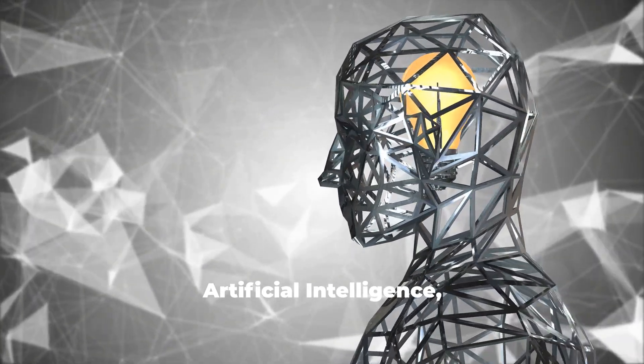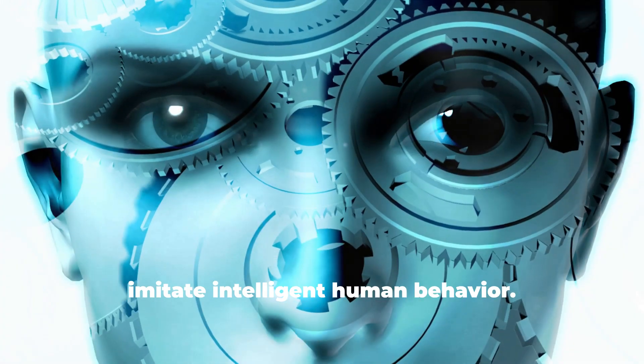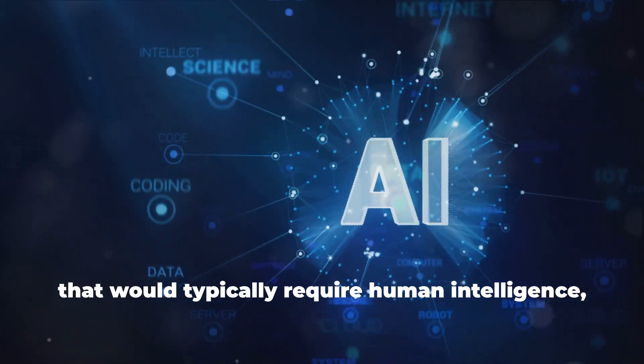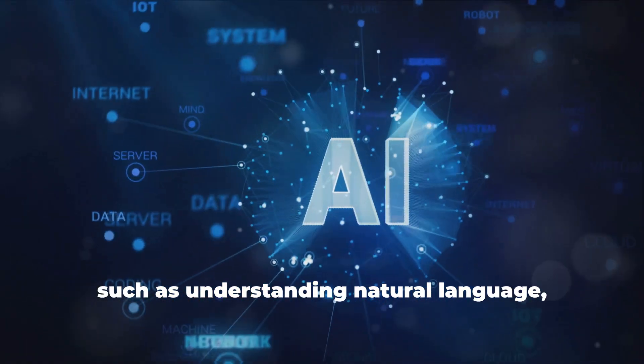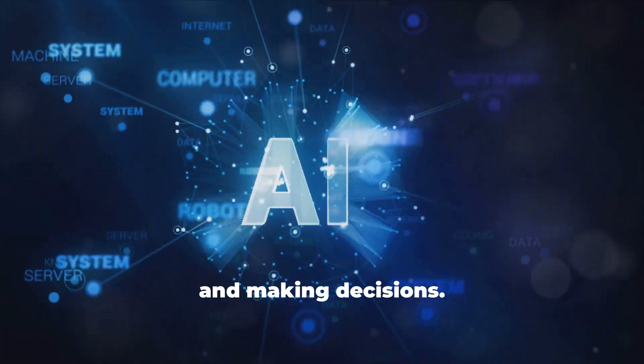Artificial intelligence, broadly defined, refers to the capability of a machine to imitate intelligent human behavior. AI systems are designed to perform tasks that would typically require human intelligence, such as understanding natural language, recognizing patterns, solving problems, and making decisions.